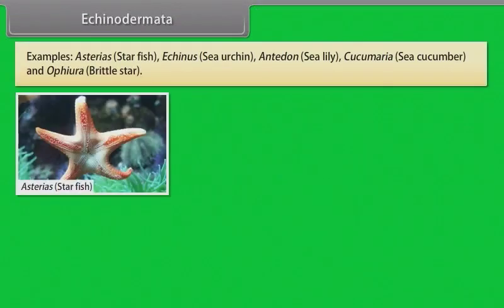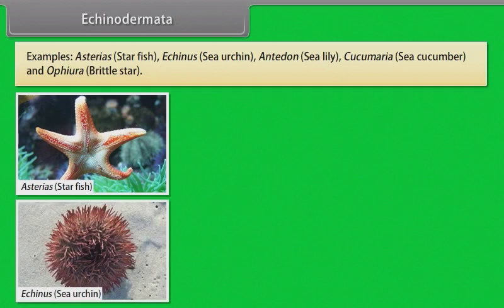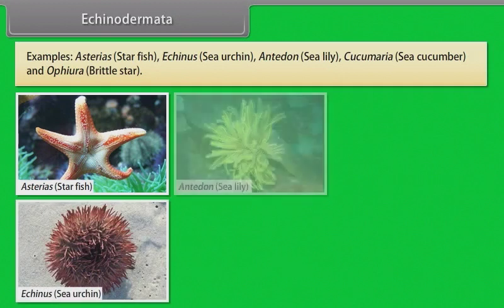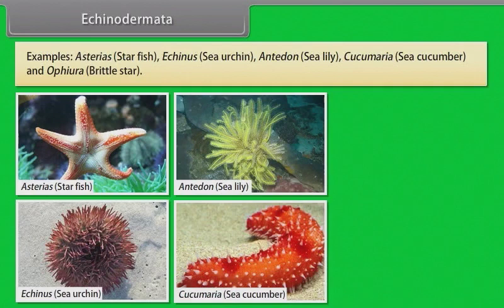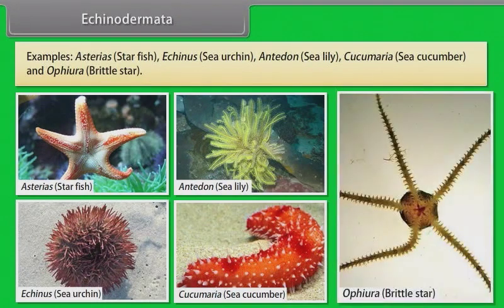Examples: Asterias (starfish), Echinus (sea urchin), Antedon (sea lily), Cucumaria (sea cucumber), and Ophiura (brittle star).